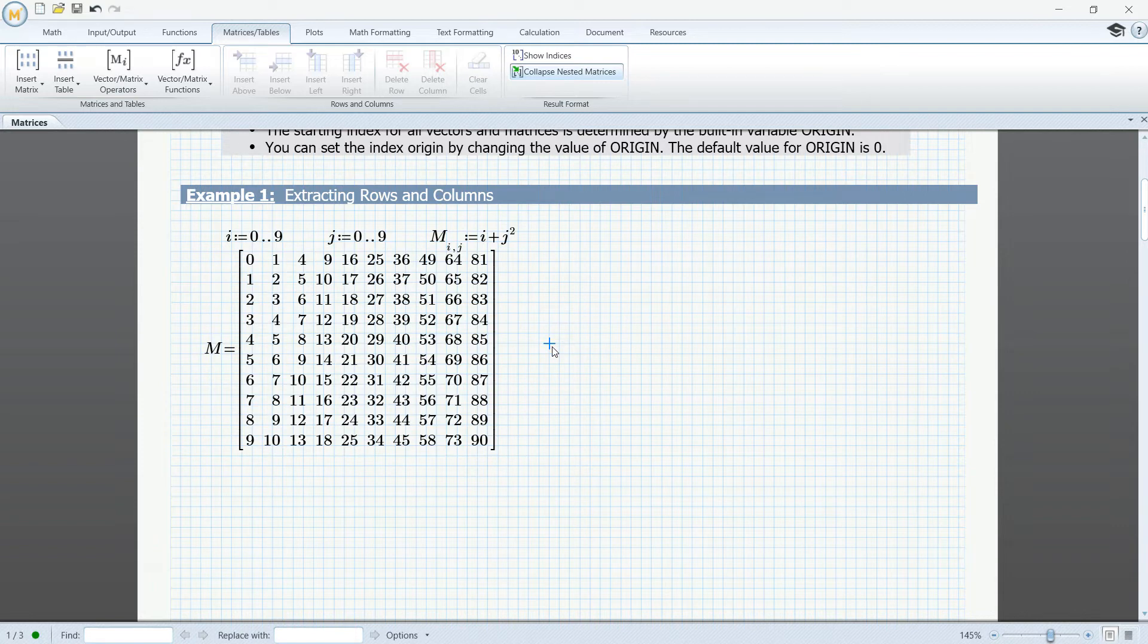Now, if we want to extract a specific column from this matrix, we can do a variable assignment here, and we're going to type in the name of the matrix, and then using the keyboard shortcut, Ctrl-Shift-C, I'm going to insert the column operator, and I'm going to type here the number of the column that I want to extract. So, if I go here and evaluate, in this particular case, I've extracted the first column of the matrix.